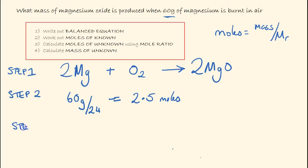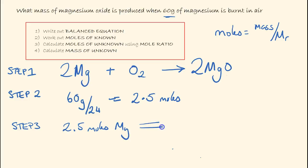Step 3 is to use the mole ratio to calculate the moles of the unknown. Looking at the balanced equation, 2 moles of magnesium produces 2 moles of magnesium oxide, so the ratio is 1:1. That means 2.5 moles of magnesium produces 2.5 moles of magnesium oxide. For oxygen the ratio is 2:1, so 2.5 moles of magnesium would react with 1.25 moles of oxygen.